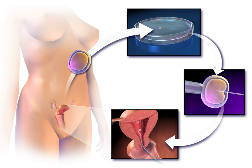Assisted Reproductive Technology are medical procedures used primarily to address infertility. It includes procedures such as in vitro fertilization, intracytoplasmic sperm injection (ICSI), cryopreservation of gametes or embryos, and may involve the use of fertility medication. When used to address infertility, it may also be referred to as fertility treatment.